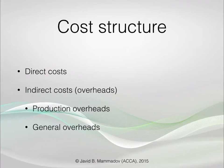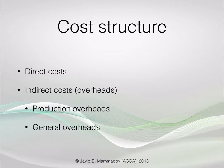Costs can be classified into direct and indirect — also known as overheads — and overheads can be classified into production and general. To illustrate this classification, let's think about a small business that produces and sells freshly squeezed juices: apple juice and orange juice.